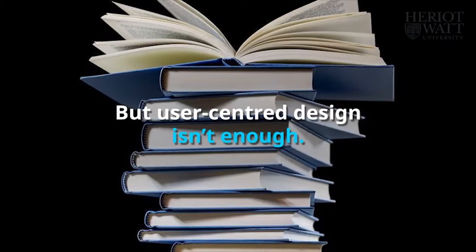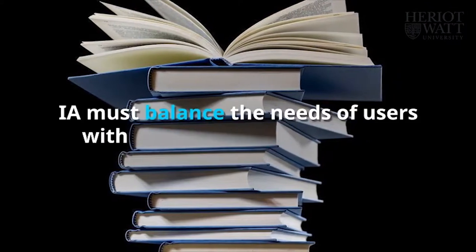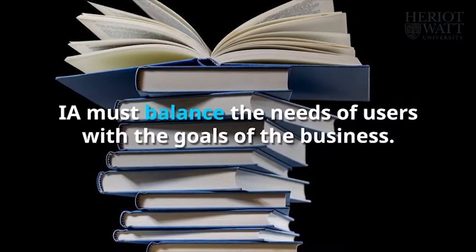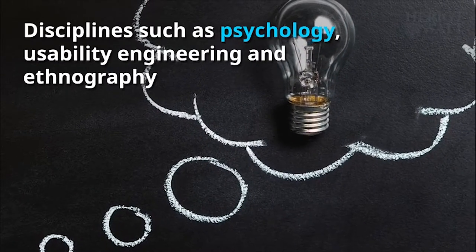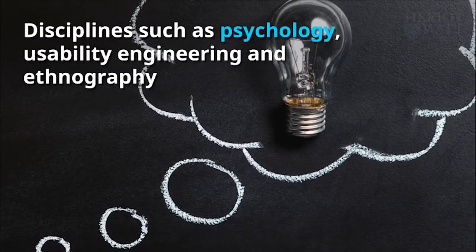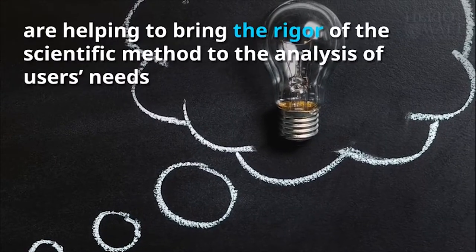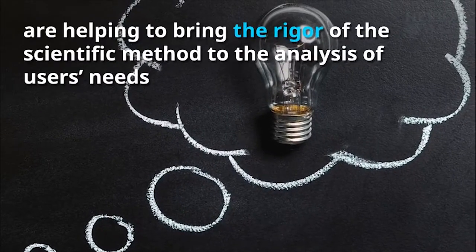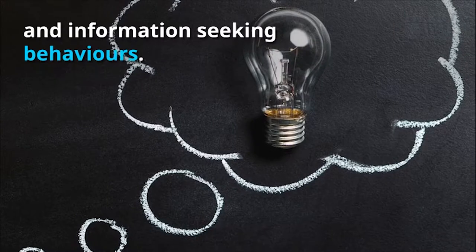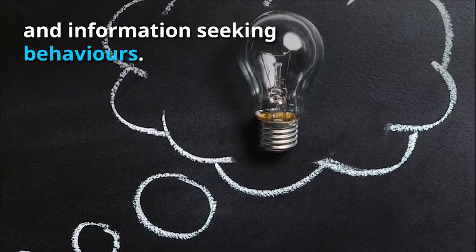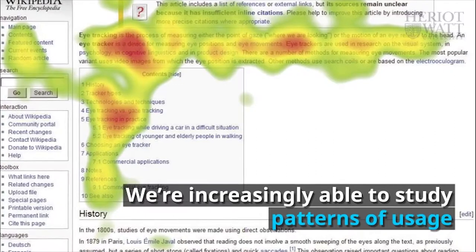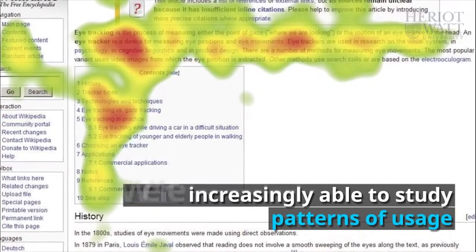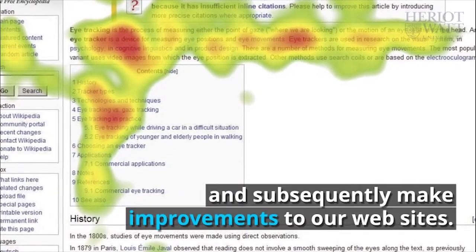But user-centred design isn't enough. IA must balance the needs of the users with the goals of the business. Disciplines such as psychology, usability engineering and ethnography are helping to bring the rigour of the scientific method to the analysis of users' needs and information-seeking behaviours. We are increasingly able to study patterns of usage and subsequently make improvements to our website.